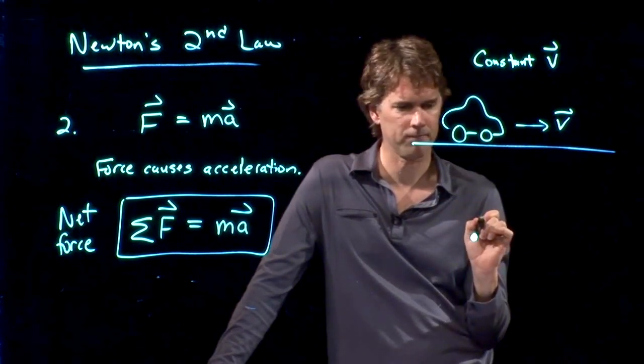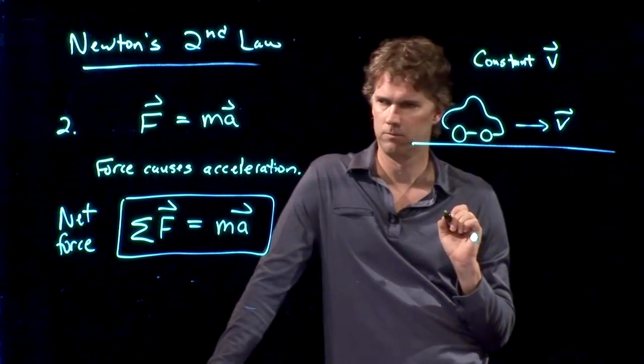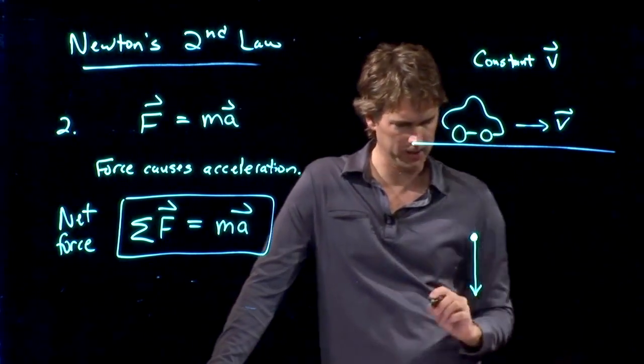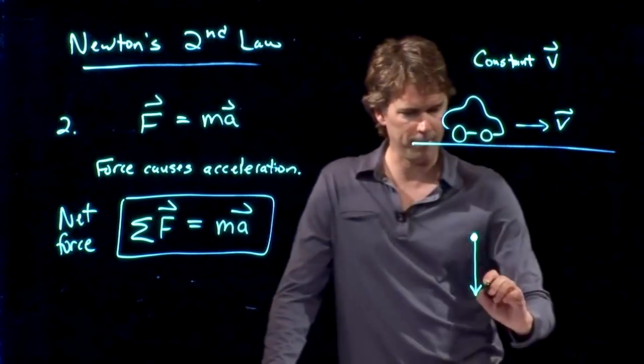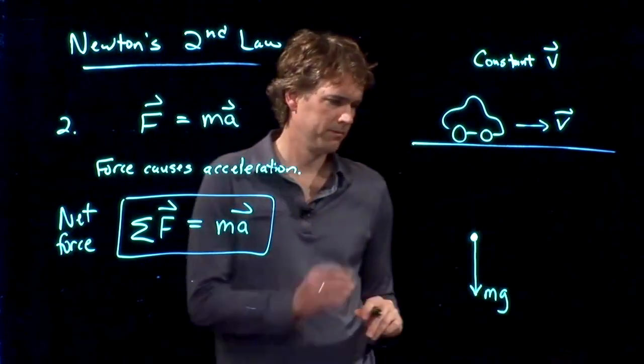Ben, what do you think? What should I draw here? I think gravity is pulling it downwards. Okay, gravity is acting on the car, and it's pulling it downwards, and we know that gravity has a magnitude of mg. Good.